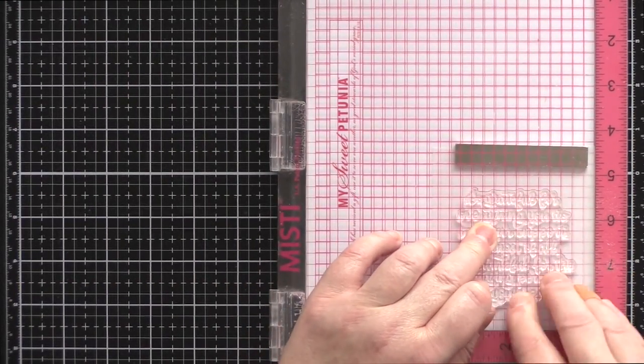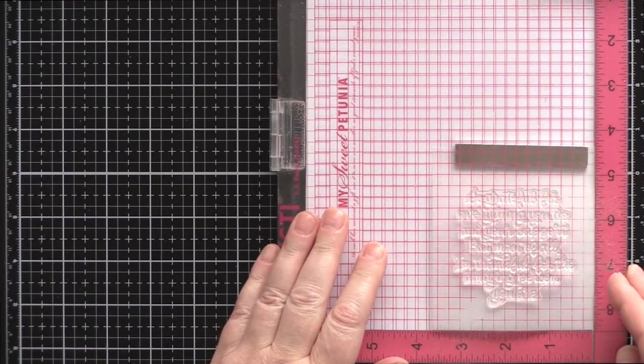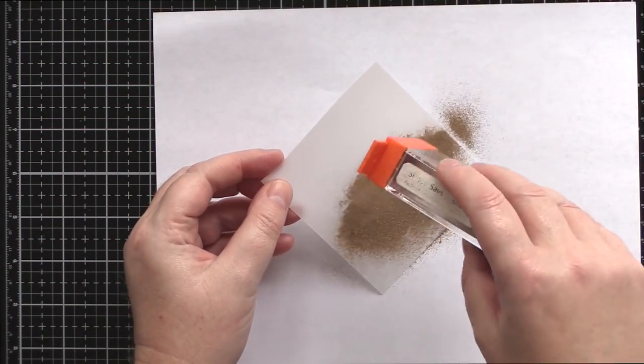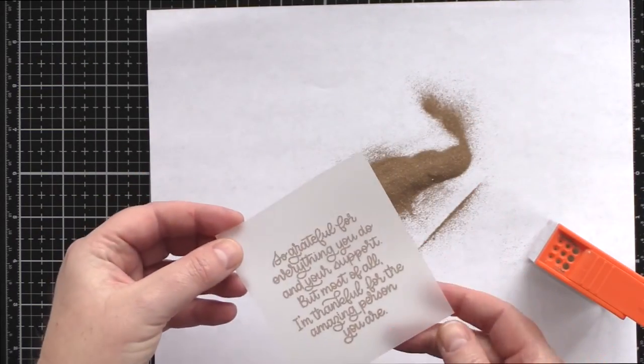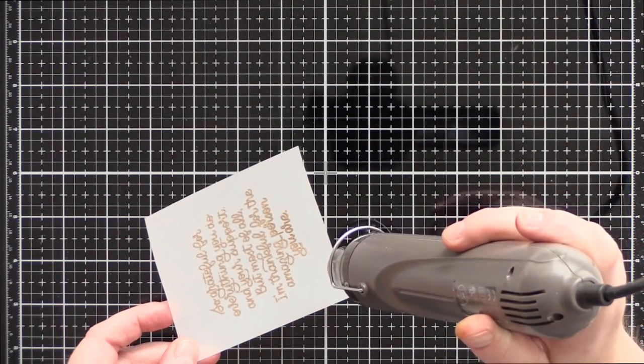I decided on stamping the sentiment on vellum instead. This way when I layered over the background panel you would still be able to see the leaves peeking through the vellum and giving them an almost misty look which I felt suited the autumnal theme.